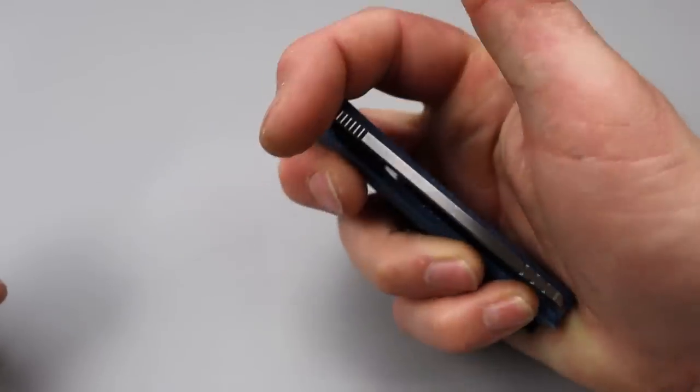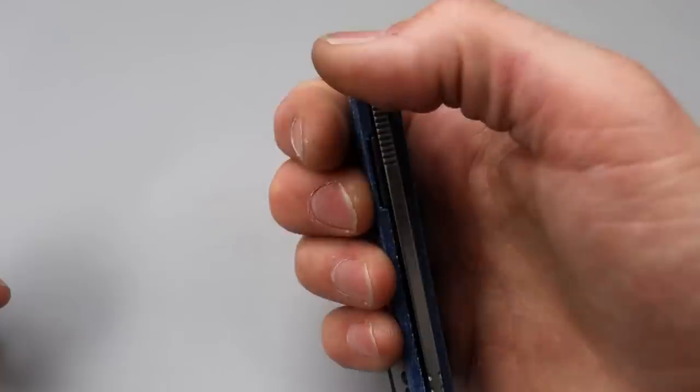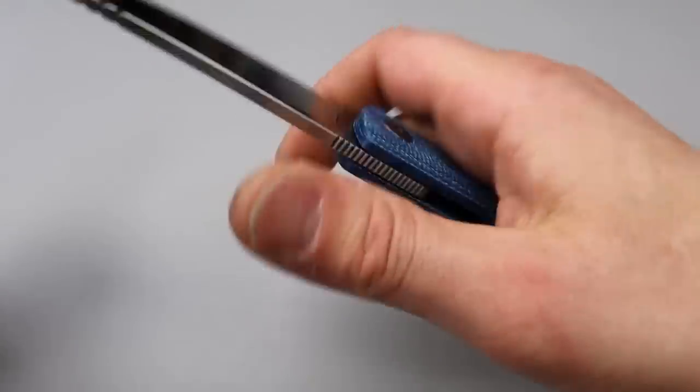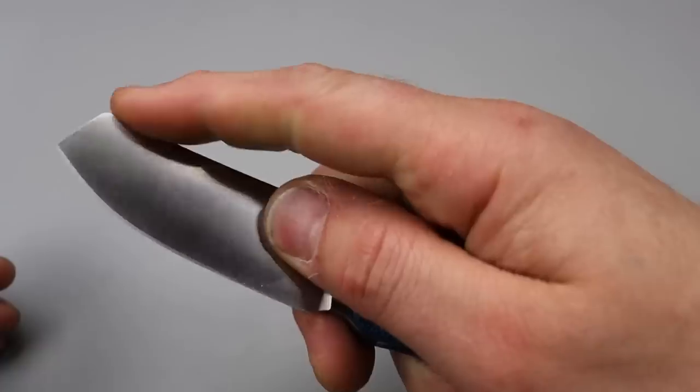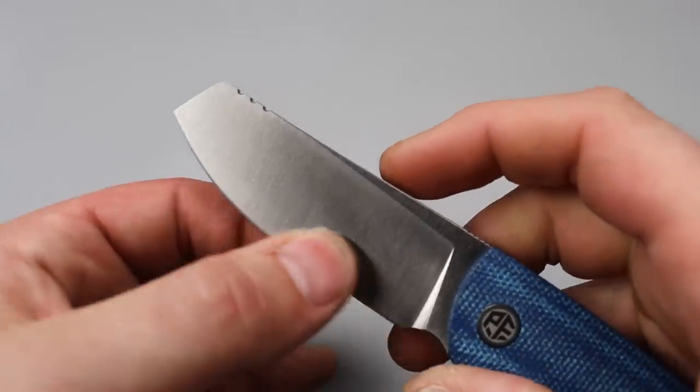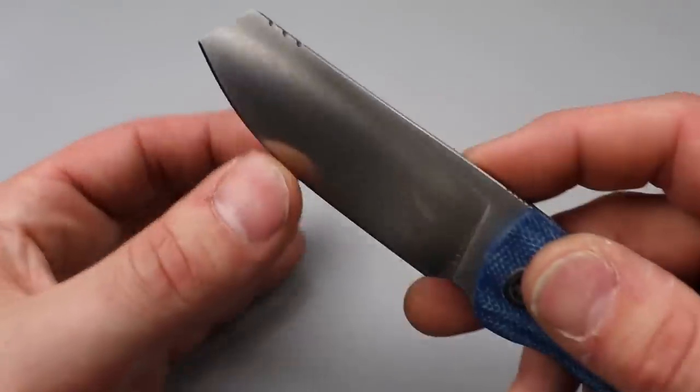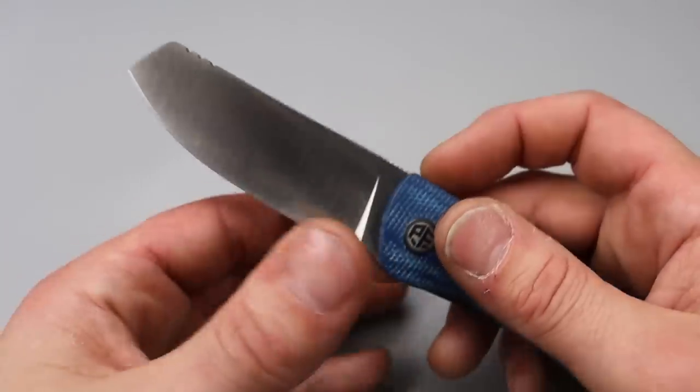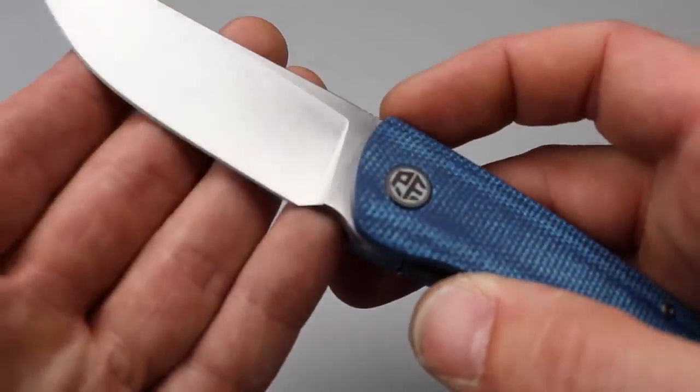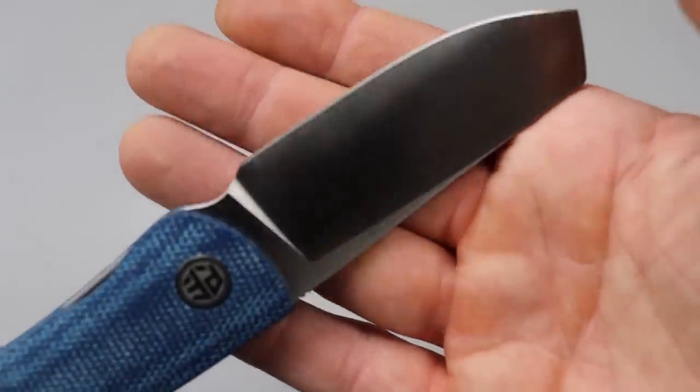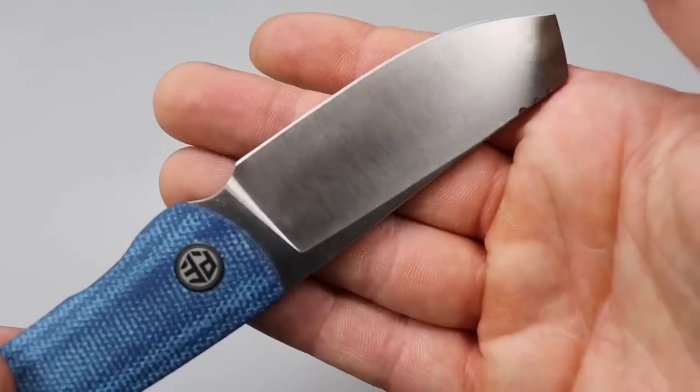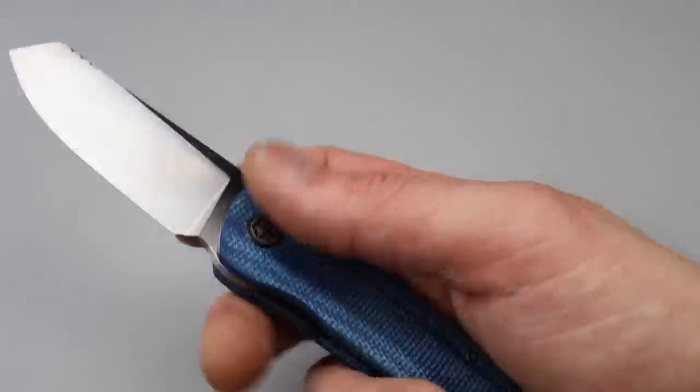Very, very cool. And because the front flipper's so easy to use, man, you can really manipulate this thing very easily. The geometry, it gets down pretty thin behind the edge. The edge feels very thin. Plunge grind, they left you something to sharpen off. I like it.